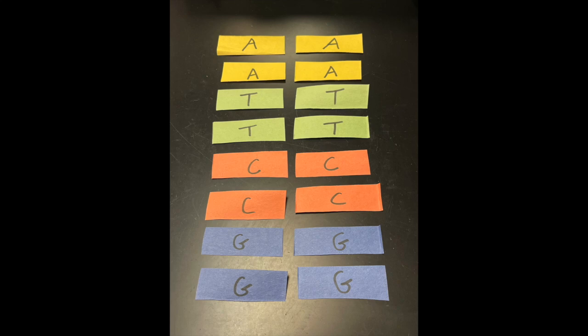So like in my example, my yellow is A for adenine, my green is T for thymine, my orange is C for cytosine, and my blue is G for guanine.